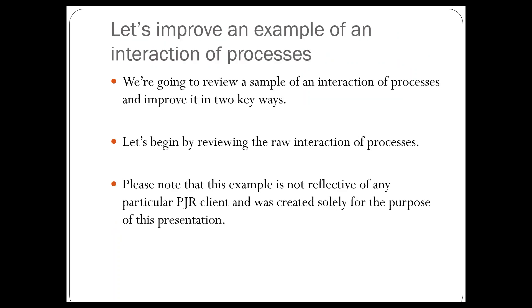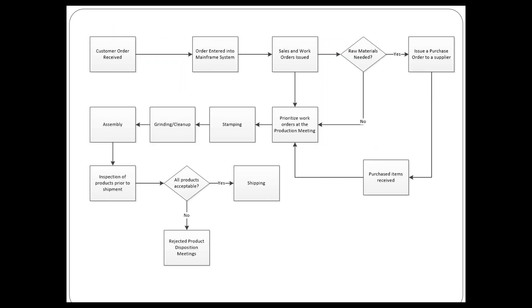What we're going to do is review an example of an interaction of processes and improve it in two key ways. I'd like to note that this particular example is not reflective of any particular PJR client — it was created solely for the purpose of this presentation. So now we are looking at the raw interaction of processes document, and you'll note that there are 12 boxes and two decision diamonds.